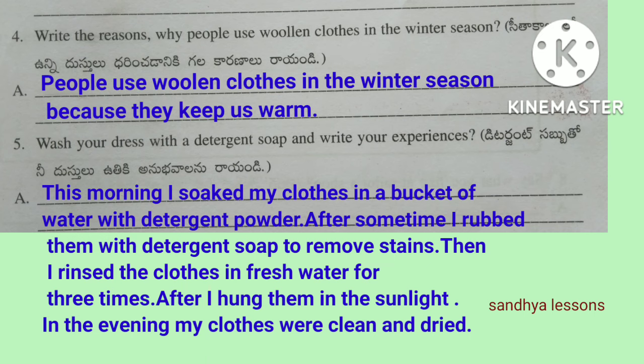Fourth question: Write the reasons why people use woolen clothes in the winter season. People use woolen clothes in the winter season because they keep us warm. Fifth question: Wash your dress with a detergent soap and write your experiences. This morning I soaked my clothes in a bucket of water with detergent powder. After some time, I rubbed them with detergent soap to remove stains. Then I rinsed the clothes in fresh water three times. After that, I hung them in the sunlight. In the evening, my clothes were clean and dried.